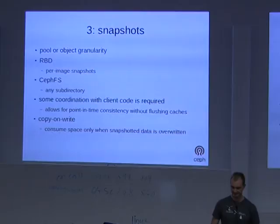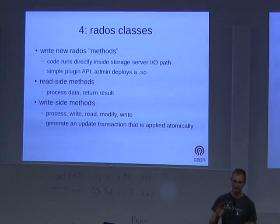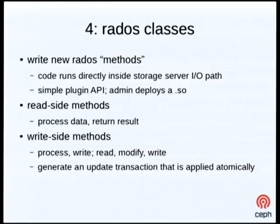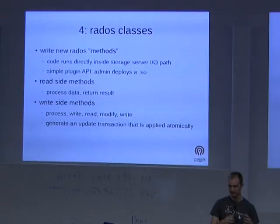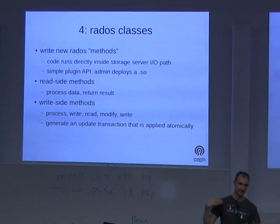The fourth and perhaps most exciting thing is the ability to implement new classes in RADOS. If you think in object-oriented terms — data with methods that manipulate that data — you can think of RADOS as implementing basic methods like read and write extent, set attribute, delete. RADOS classes allow you to implement new code, new object methods based on existing functionality, compile that code, embed it into the storage system, and execute it there. There's a simple plug-in API that lets you write these new methods. The admin builds it into a shared object, deploys it on all your object servers, and then clients can invoke that code using the RADOS API.